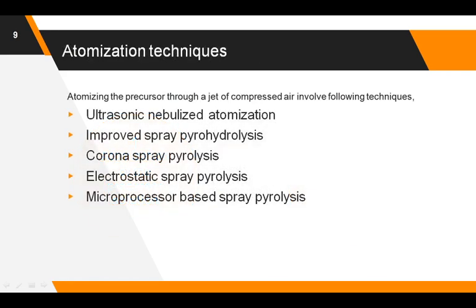The optimization of the precursor solution is the first step in the spray pyrolysis deposition system. The idea is to generate droplets from the spray solution and send them with some initial velocity toward the substrate surface. Different atomization techniques used in spray pyrolysis include ultrasonic nebulizer atomization, improved spray pyrohydrolysis, corona spray pyrolysis, electrostatic spray pyrolysis, and microprocessor-based techniques. The atomizer differs in resulting droplet size, rate of atomization, and the initial velocity of the droplets.